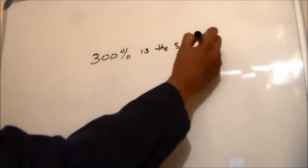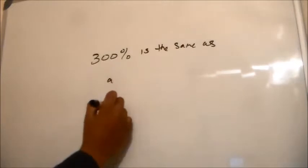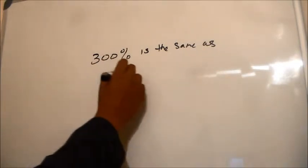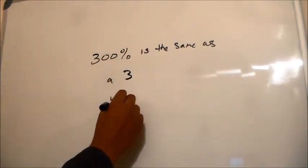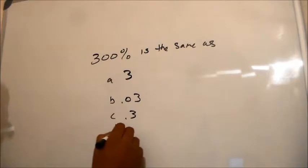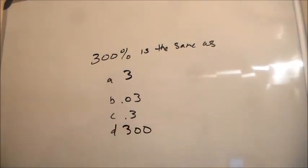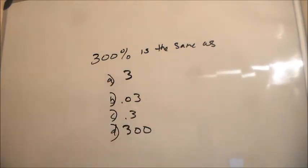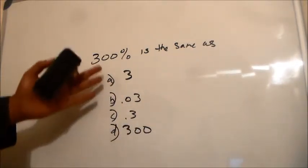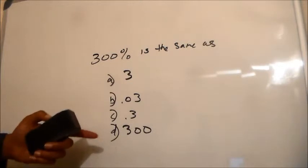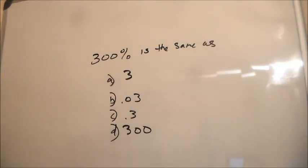Our options are: A is three, then we have point zero three, point three, and three hundred. Let me make sure no decimal points are misconstrued — the answer selections are three, point zero three, point three, and three hundred.